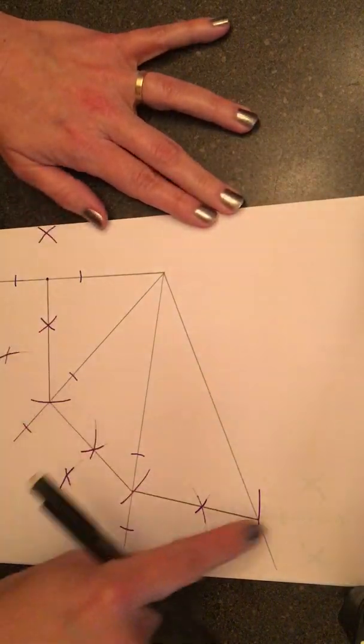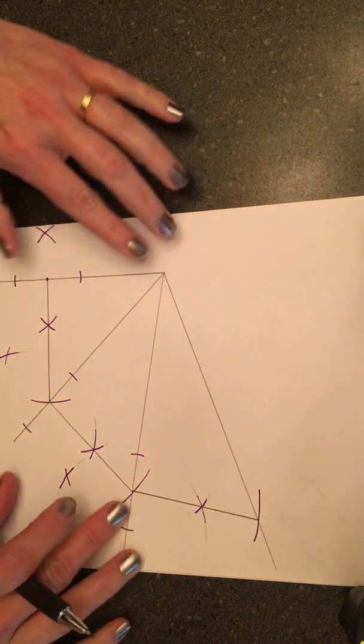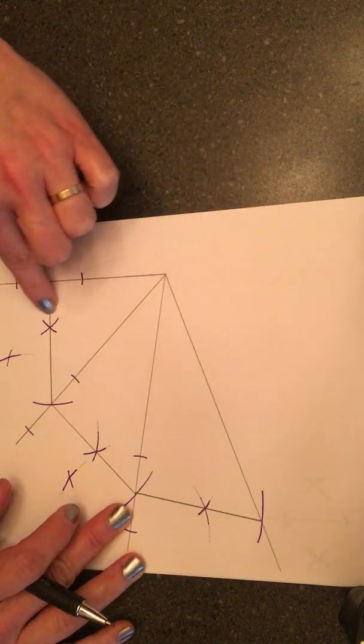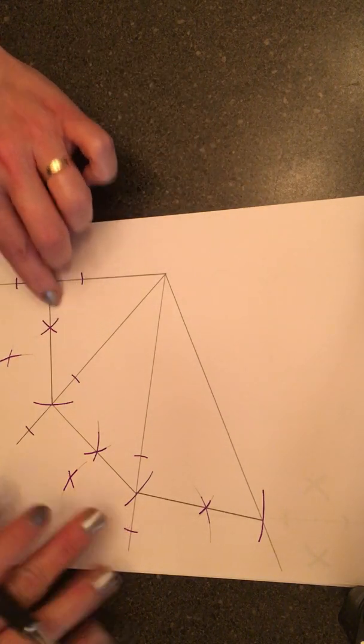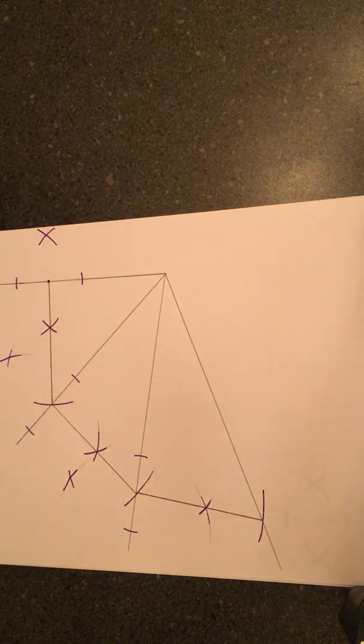Okay, you're going to keep doing this same construction right here until your final triangle overlaps your first triangle about this much. It varies a little bit based on your construction and your accuracy, but most of them end up overlapping about right here. So I hope this helps. Good luck.